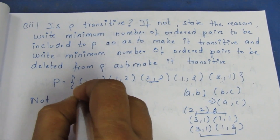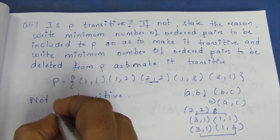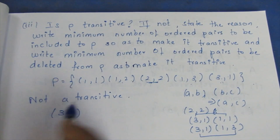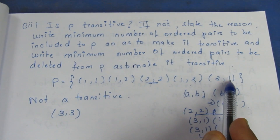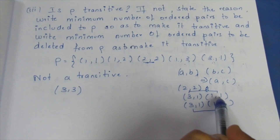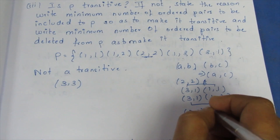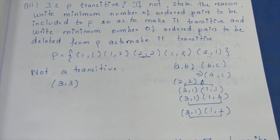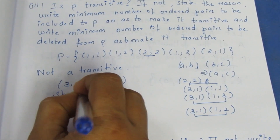P is not transitive. We have to check: (3,3) should be included. Also checking (3,1) and (1,2) — (3,2) should be included to make P transitive.